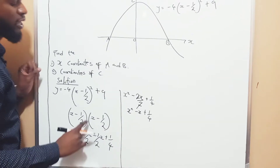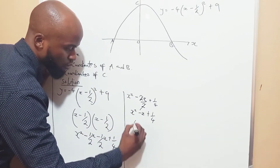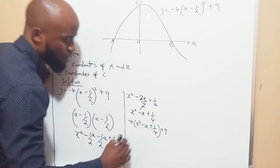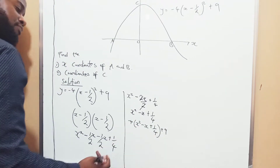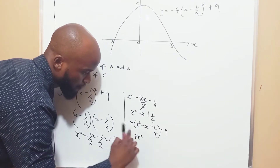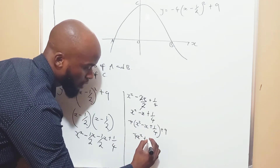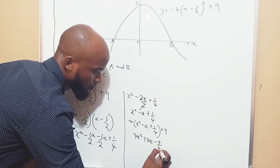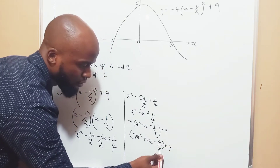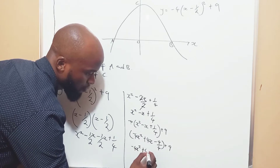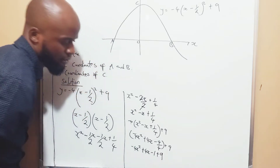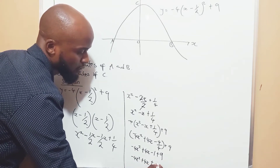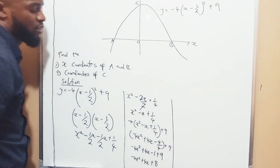So what we need to do now is bring in our negative 4 and our 9. We'll put this in brackets: x squared minus x plus 1 over 4, plus 9. Now negative 4 has to break through: negative 4 times x squared is negative 4x squared; negative 4 times negative x is plus 4x; negative 4 times positive 1 over 4 is negative 1. So we have negative 4x squared plus 4x minus 1 plus 9, which simplifies to negative 4x squared plus 4x plus 8. We've just broken this down and simplified it.